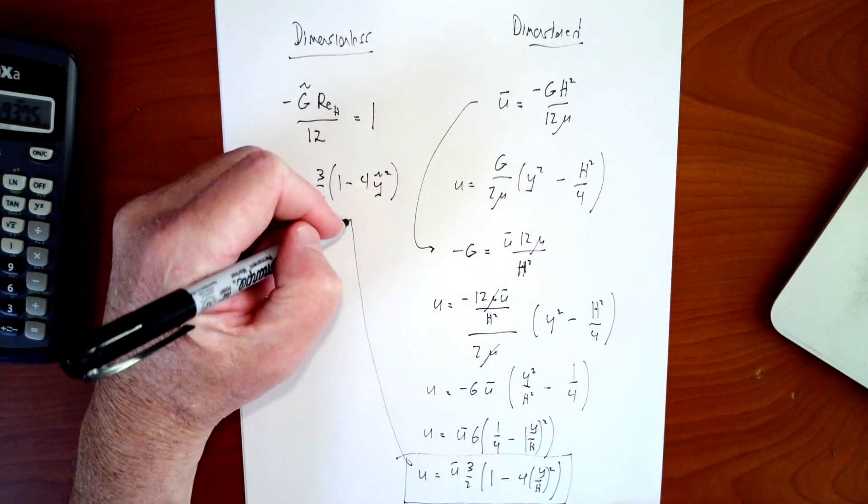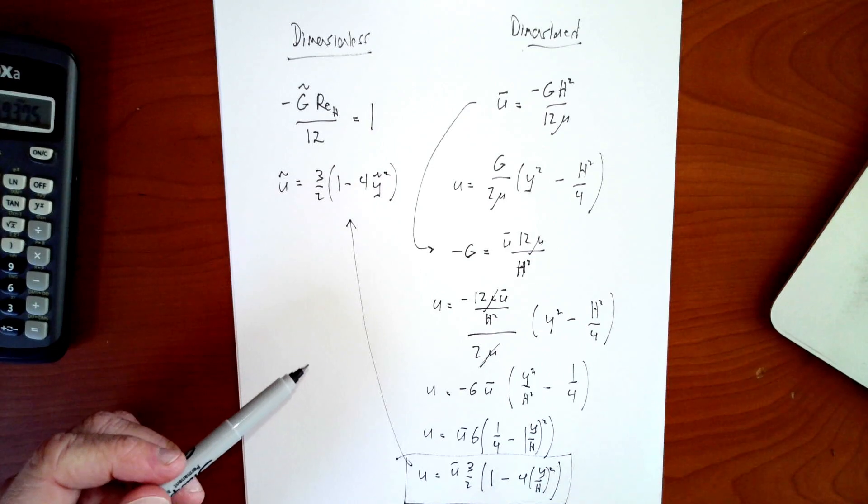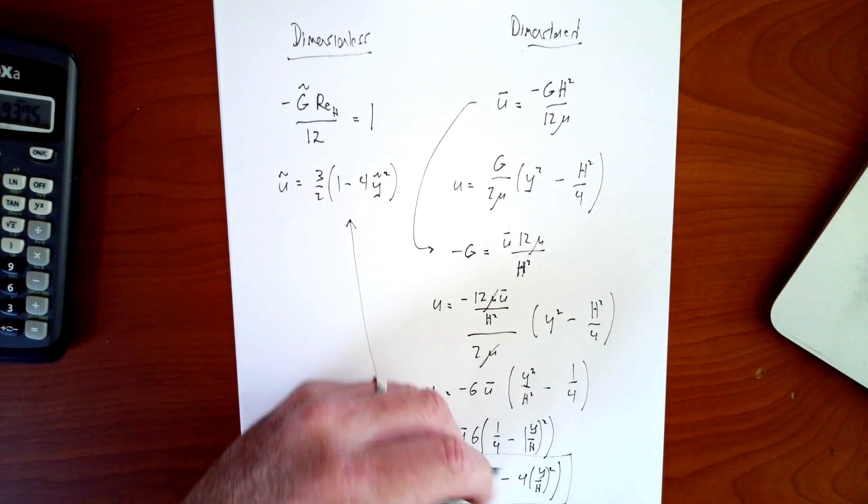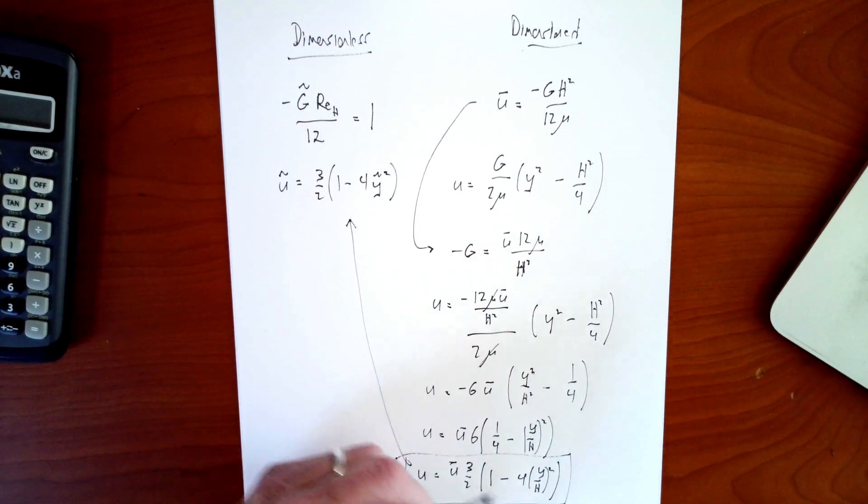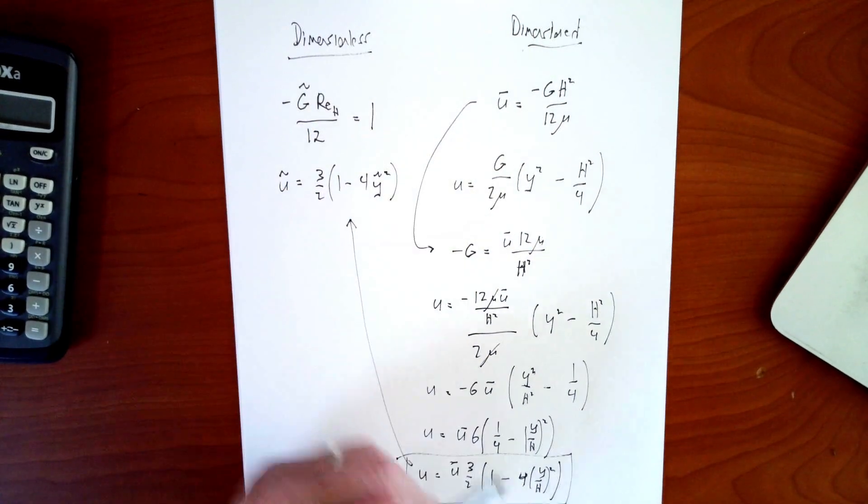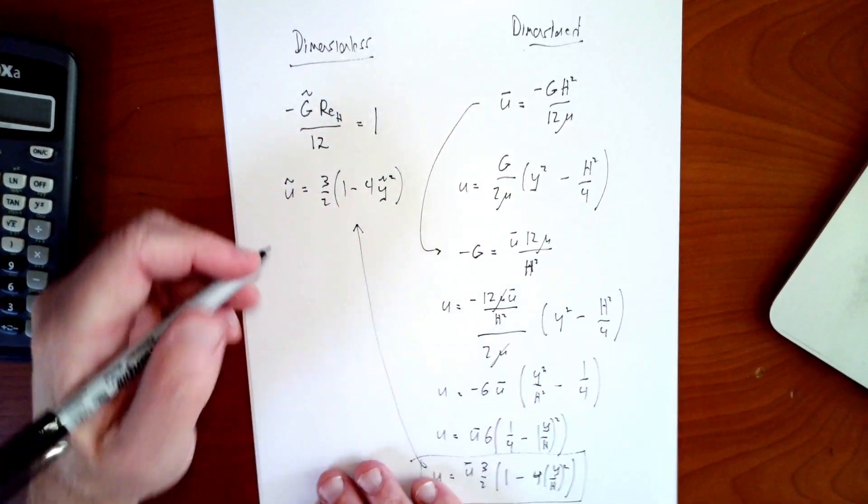Which of course, looks a lot like that. So you can see again, they're obviously the same answer. But this one, a little more complicated, because it explicitly puts the u bar here. Of course, the y over h is the same as y tilde. So they're really the same equation. But this is a little cleaner and neater.